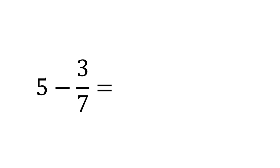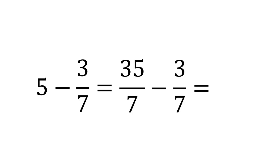What about if we've got an integer involved? In this example, we've got five minus three sevenths. All we need to do is convert that five into a fraction with the same denominator — sevenths. There must be seven sevenths in each whole, so five is five times seven over seven, which is thirty-five over seven. Now we can subtract as before: thirty-five minus three is thirty-two, so the answer is thirty-two sevenths. This works the same way if the integer is being subtracted or if we're adding — just convert the integer into a fraction with the same denominator.